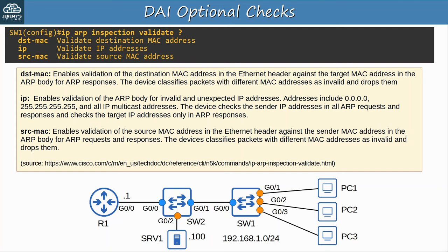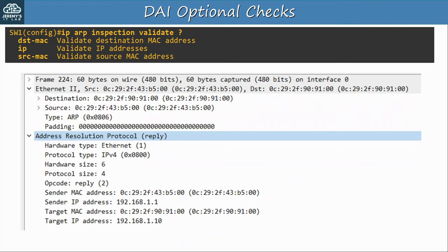IP validation looks for invalid or unexpected IP addresses which shouldn't be found in ARP messages, such as 0.0.0.0, 255.255.255.255, and multicast IP addresses. The sender IP address is checked in both ARP request and reply messages, but the target IP address is checked only in ARP replies. Source MAC validation checks the source MAC of the Ethernet header and compares it to the sender MAC in the ARP message — if they don't match, the message is considered invalid and is dropped.